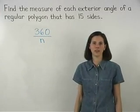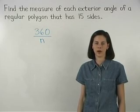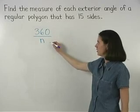So the formula for finding the measure of each exterior angle of a regular polygon is simply 360 over n.